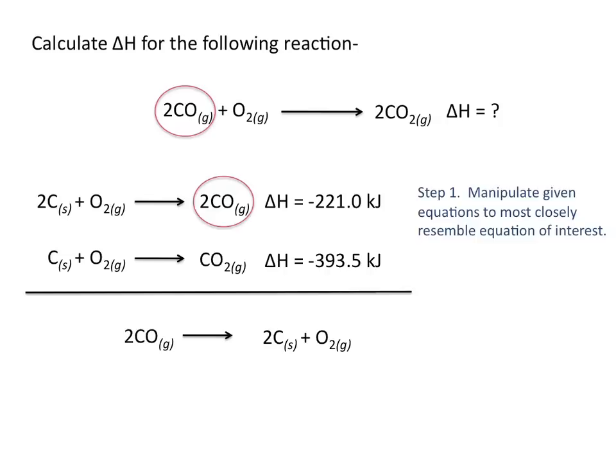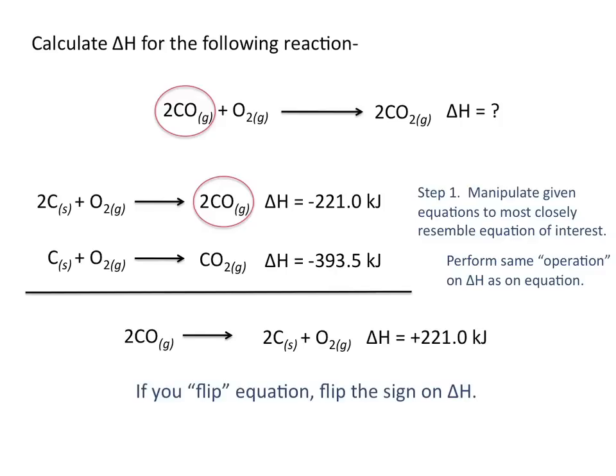Because we flipped this reaction, we need to flip the sign on delta H. The delta H value for a reaction written in the opposite direction is of the same magnitude but opposite sign. So if we flip the equation, we flip the sign on delta H.